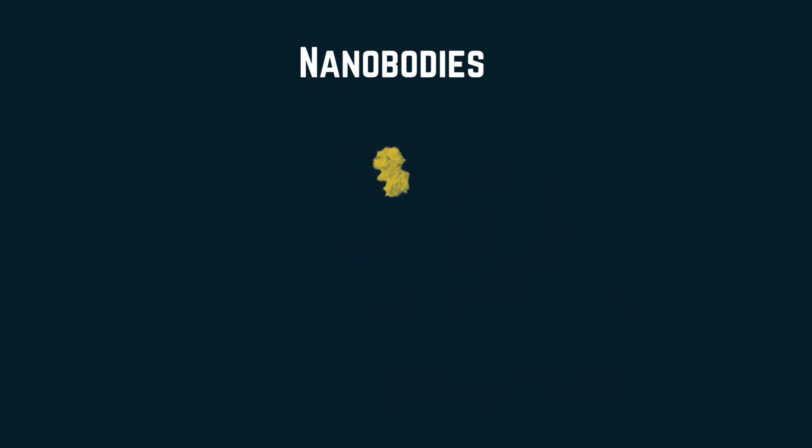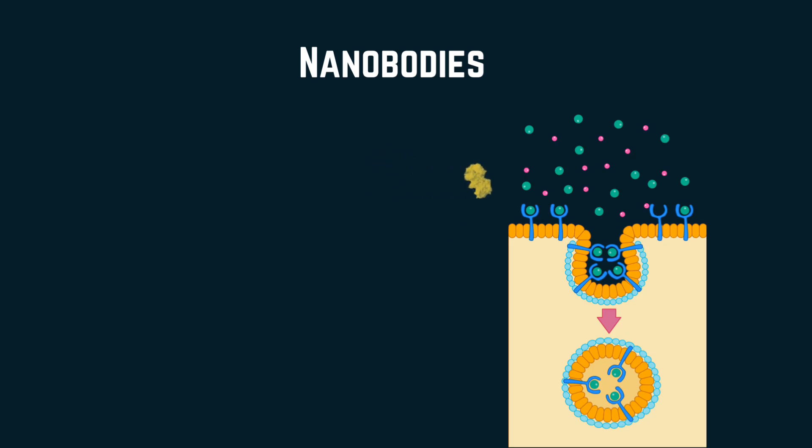The structure of nanobodies consists of a single variable domain of camelid heavy-chain-only antibody. Their small size allows them to bind to epitopes inaccessible to larger antibodies and penetrate deeper into tissues for better therapeutic effects.